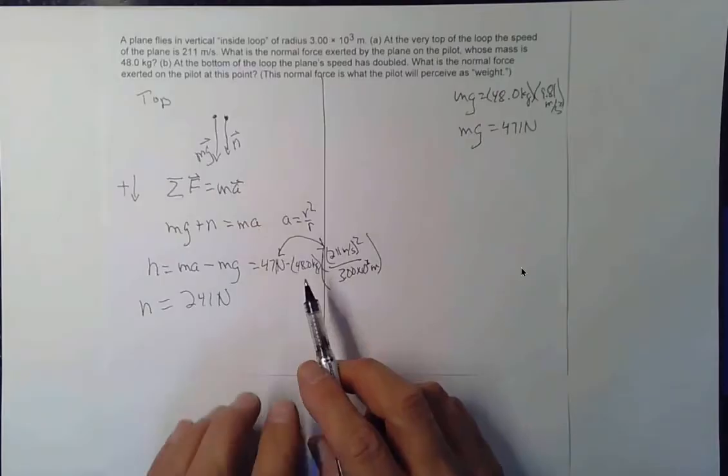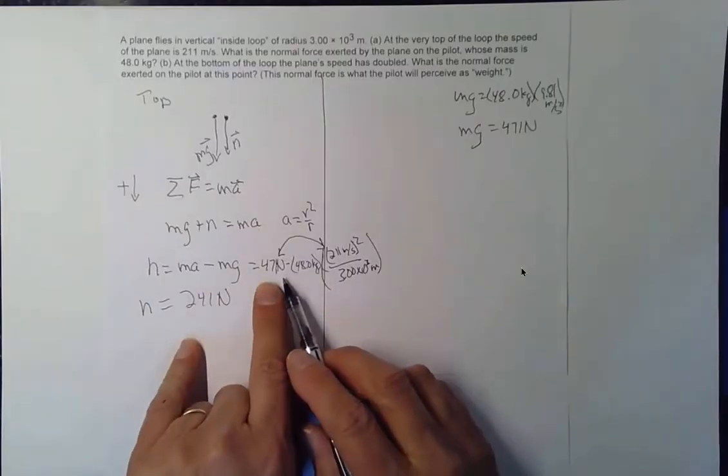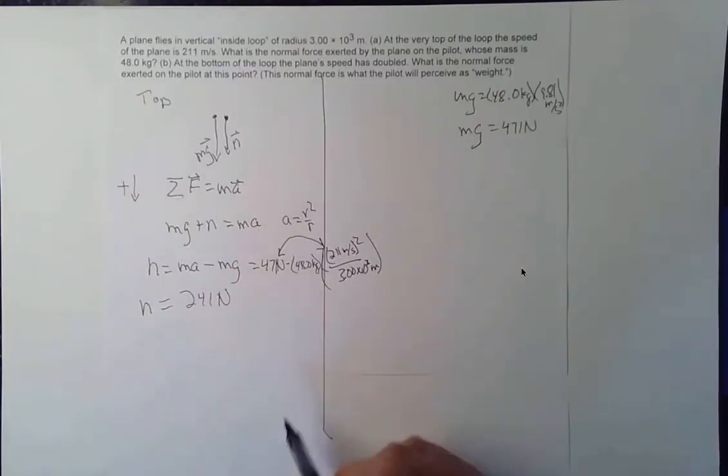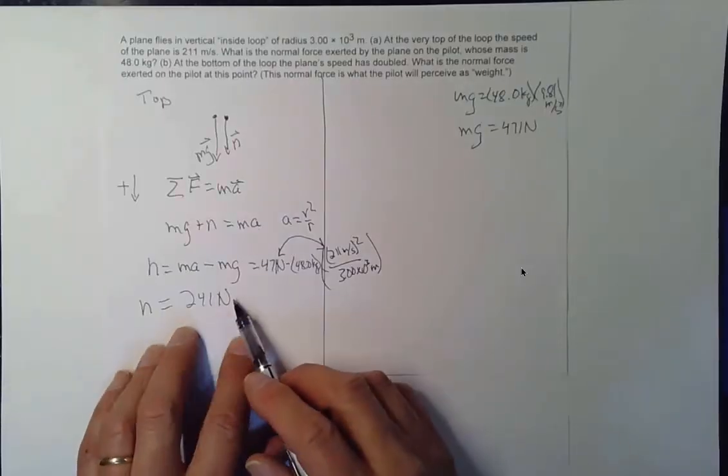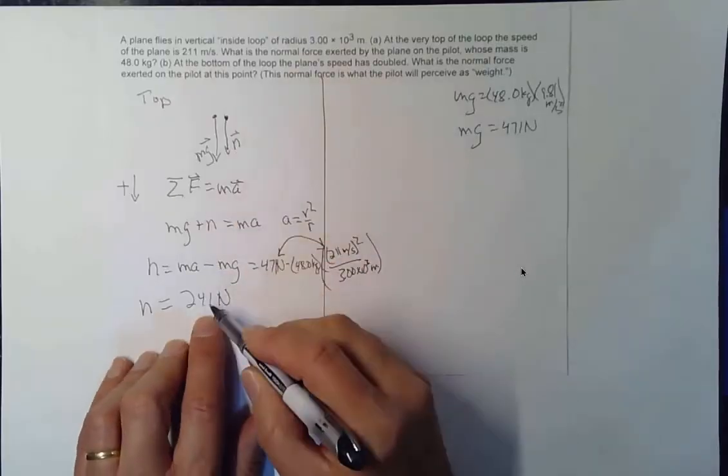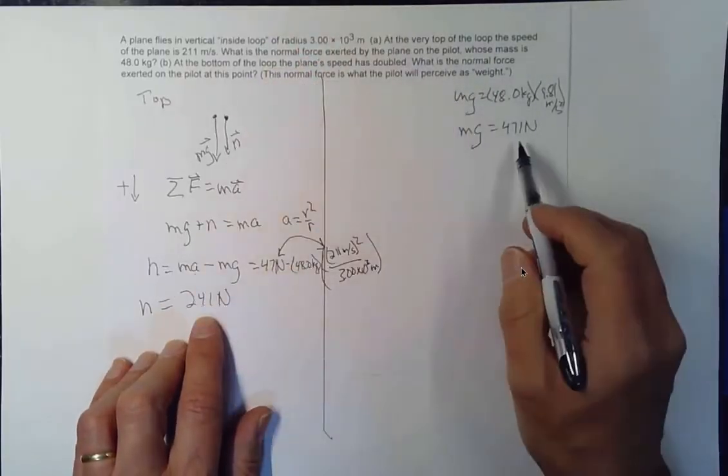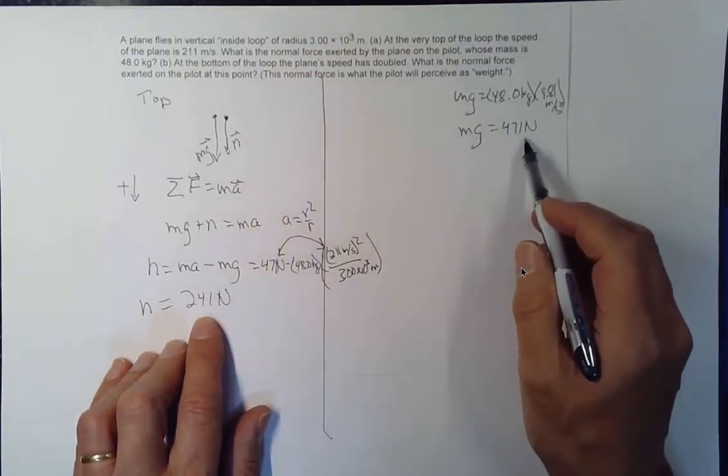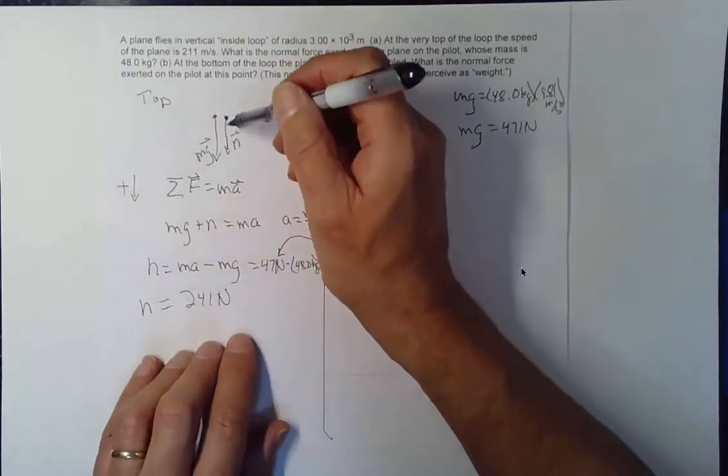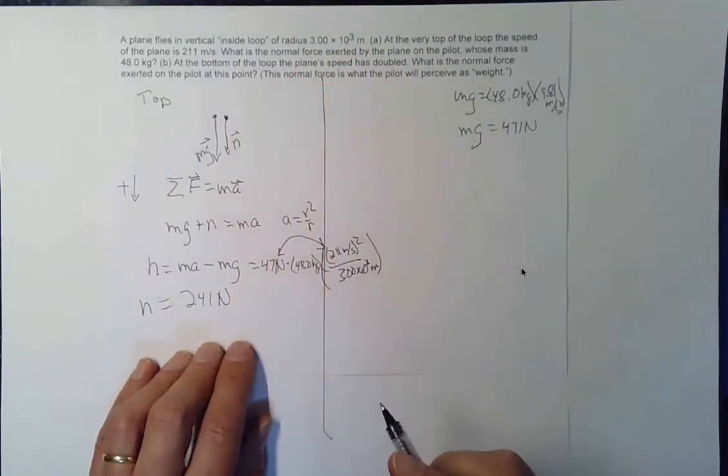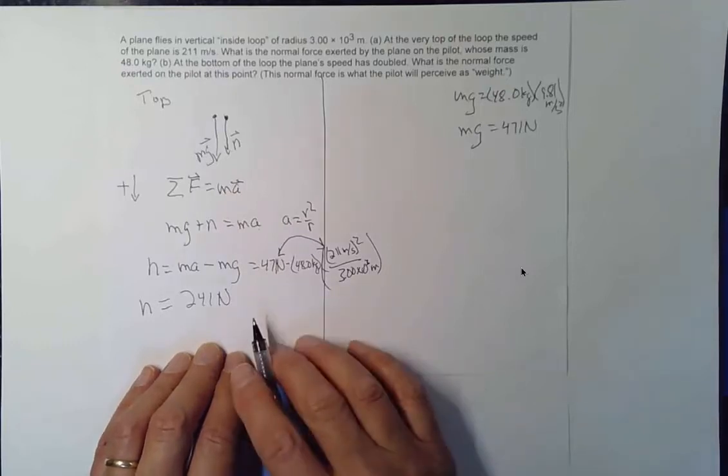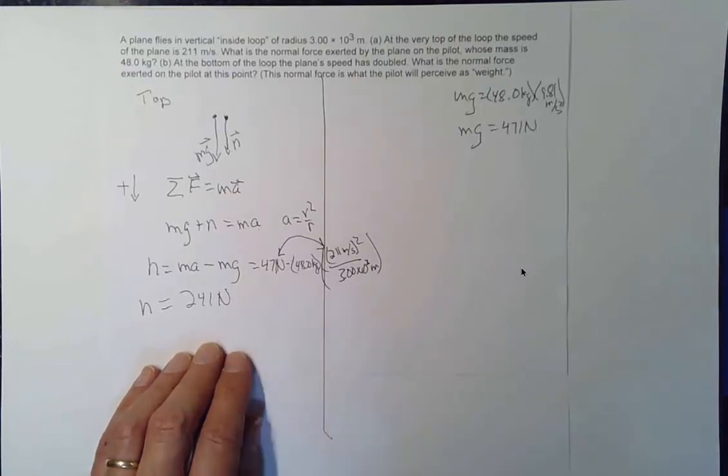Okay, the MG, the 471 newtons, isn't enough to provide that acceleration that's needed. And the normal force between a 241 newton normal force and the 471 newton weight of the pilot. That will make the pilot travel in that circular path of 3,000 meters.